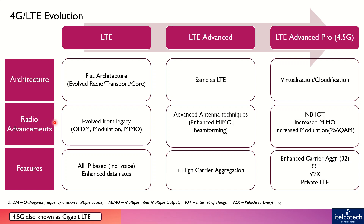In terms of radio advancements, there were certain basic features in LTE, which is release 8. After that, advanced antenna techniques evolved in LTE Advanced to get better throughput and better peak data rates. In LTE Advanced Pro, we got better modulation schemes to increase spectral efficiency, enable NBIT, and all these different features introduced new use cases in the market.